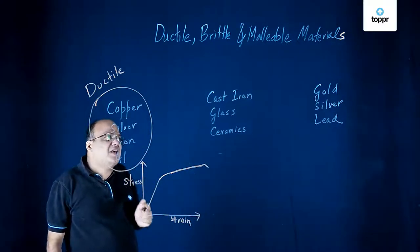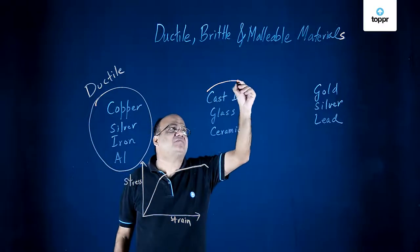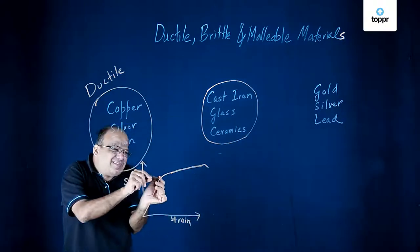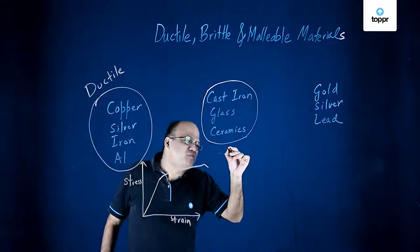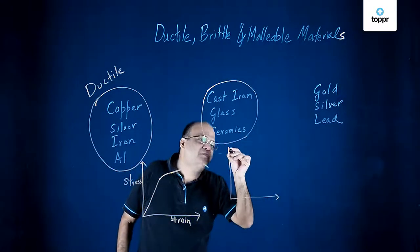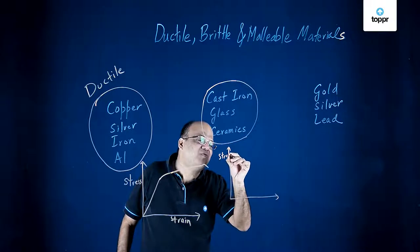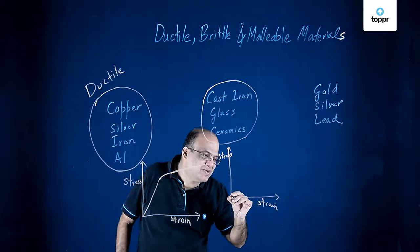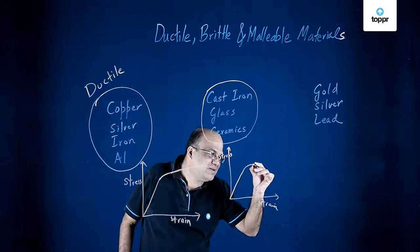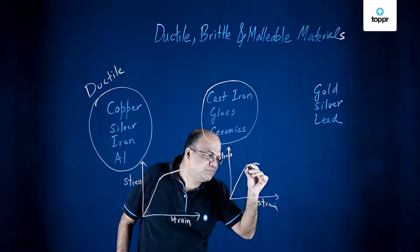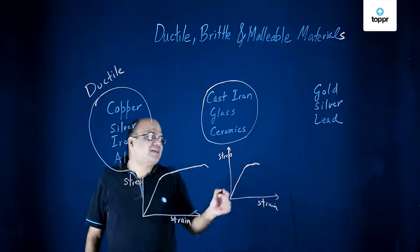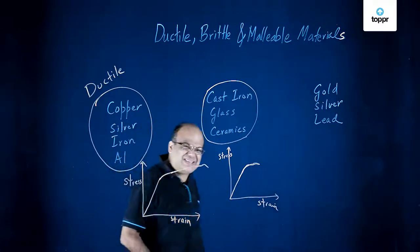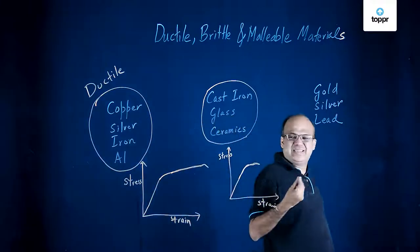What are brittle materials? Brittle materials have a very small range of plastic extensions. They break as soon as the elastic limit is exceeded. If you make the stress-strain graph of brittle materials, as soon as the elastic limit is exceeded, the material fractures. The elastic limit and the fracture point are very close together. Examples are cast iron, glass, and ceramics — these are brittle materials.